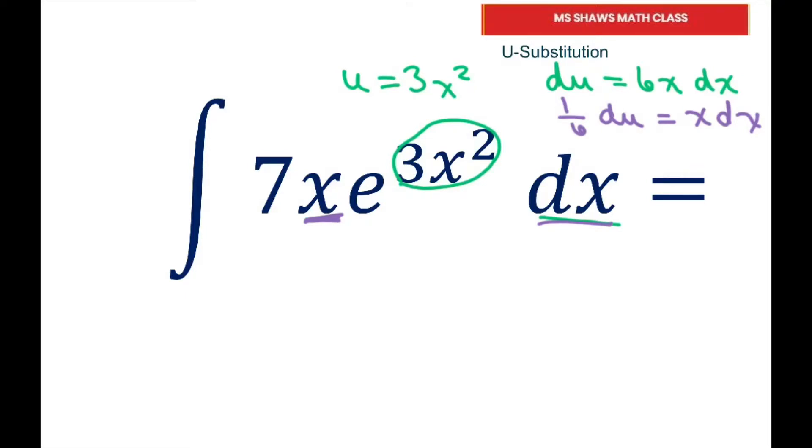And so substituting it back in, we're going to get 7. And x dx is one-sixth du. Then we have e to the u.